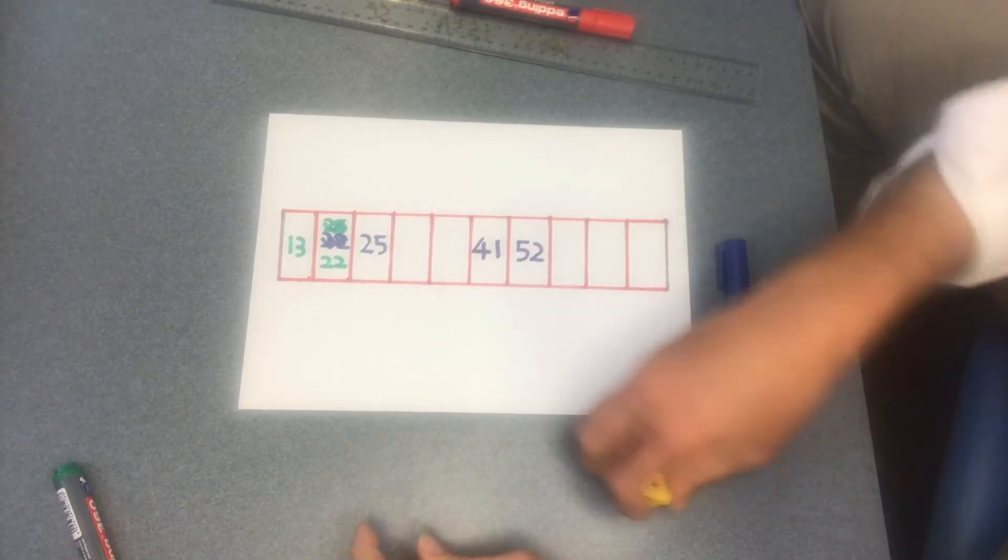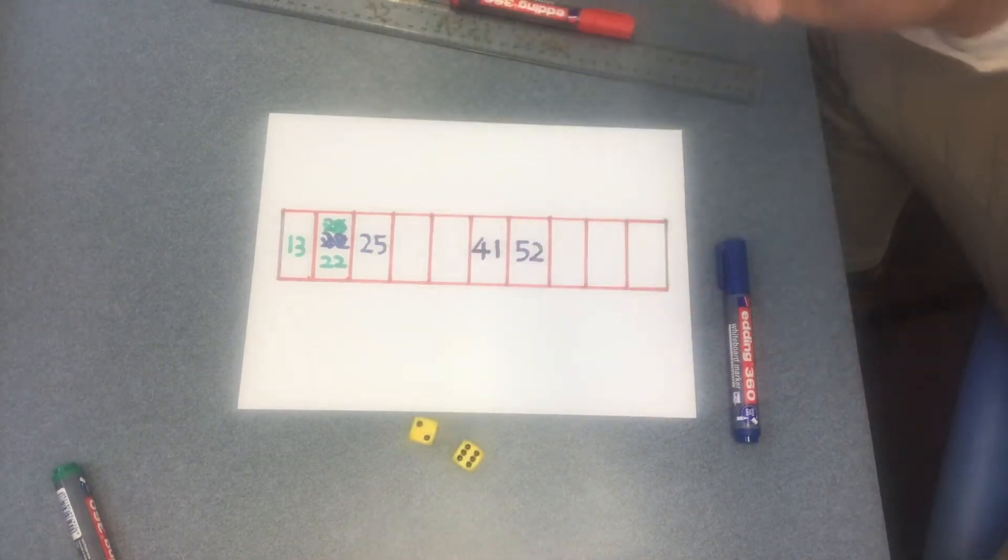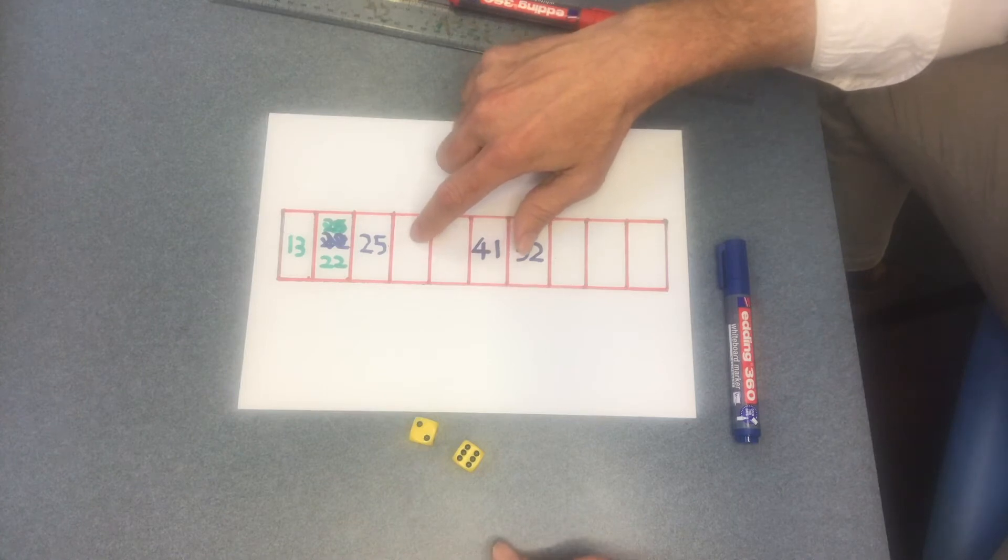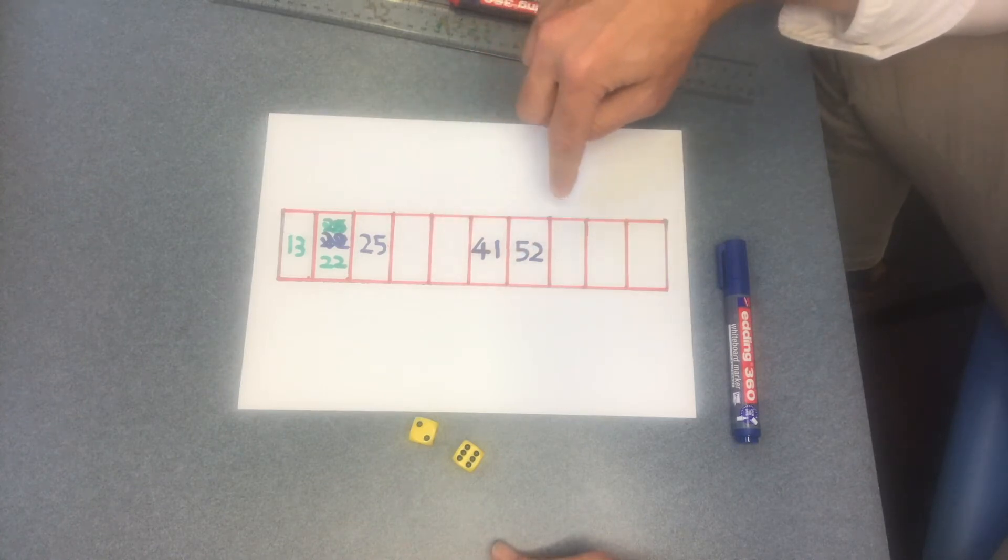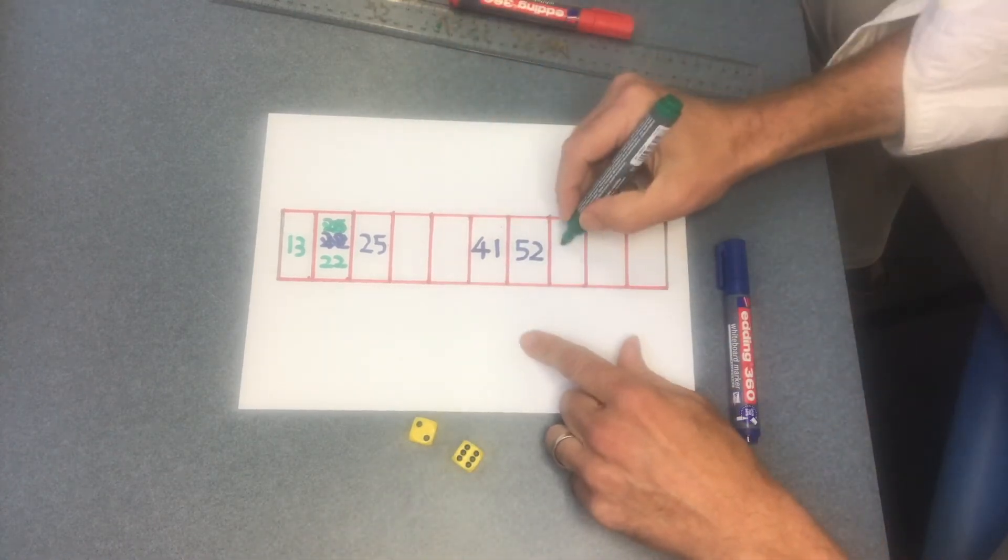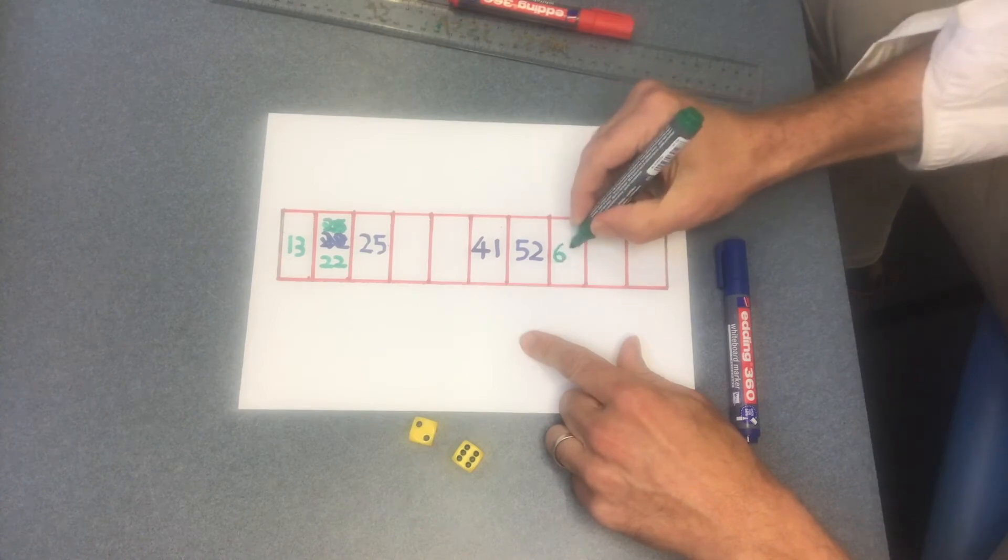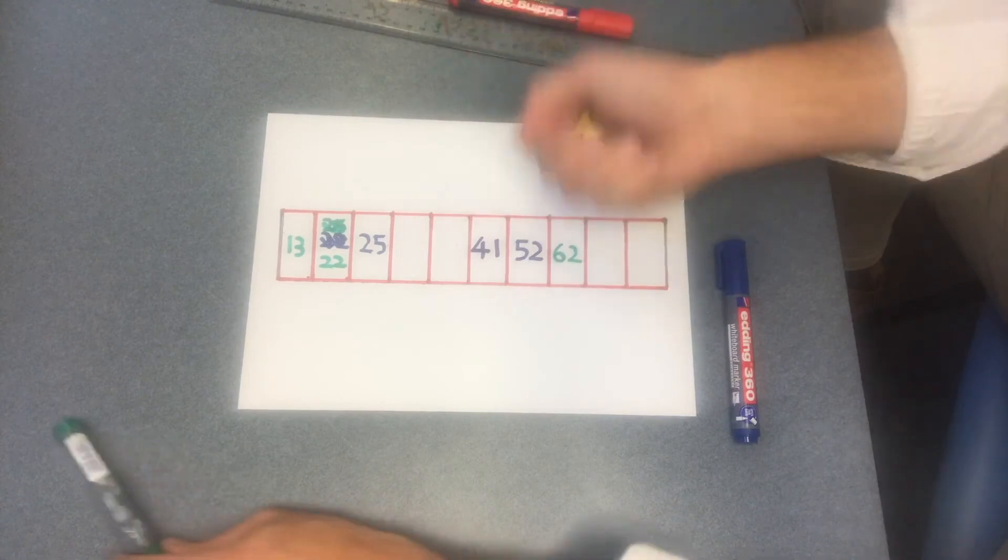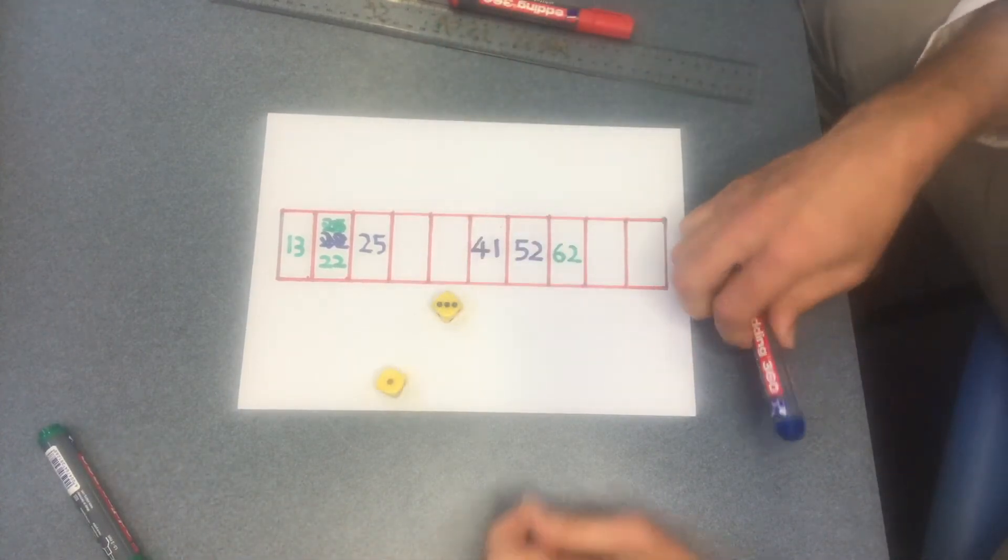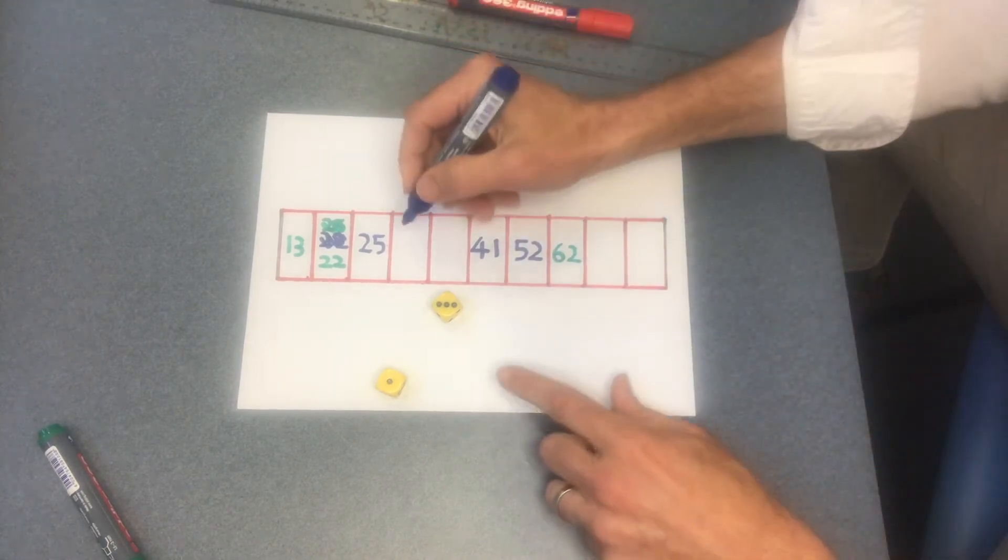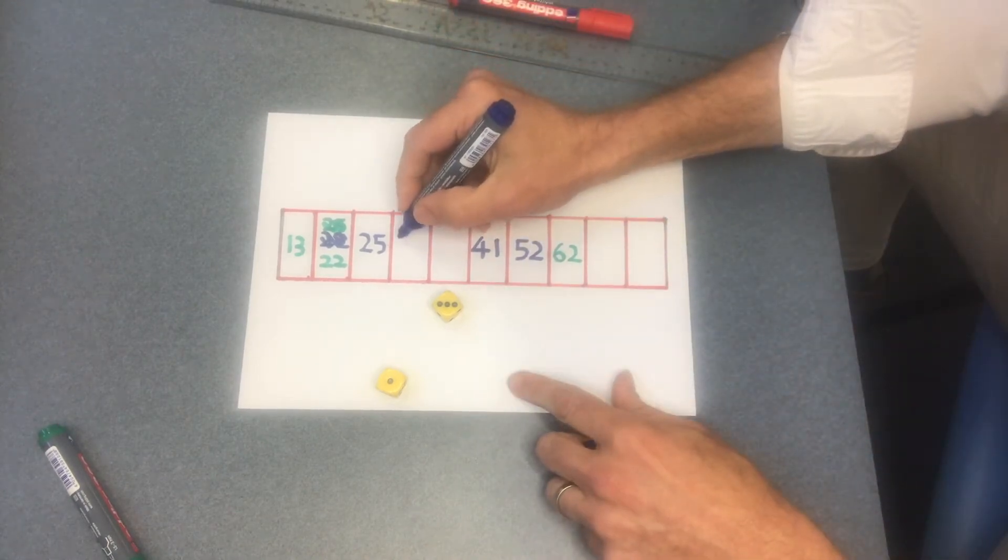Then it's the green marker person's turn again. They roll and they got 2 and 6 which is 26, so I could put that here or I could do 62, or the green marker person could do 62, so they're going to do 62. Then we roll, I roll the dice again, the green marker person, I could do 13 but it's already been done, or 31. There is a space where I could do 31 so I'm going to put 31 in there.